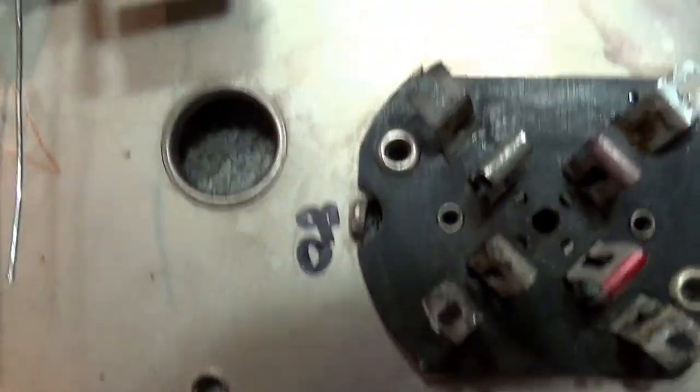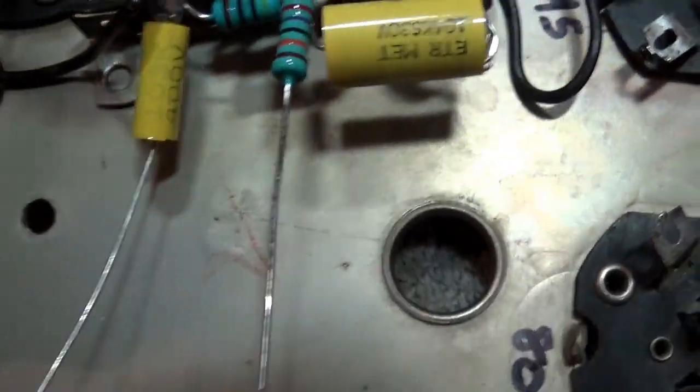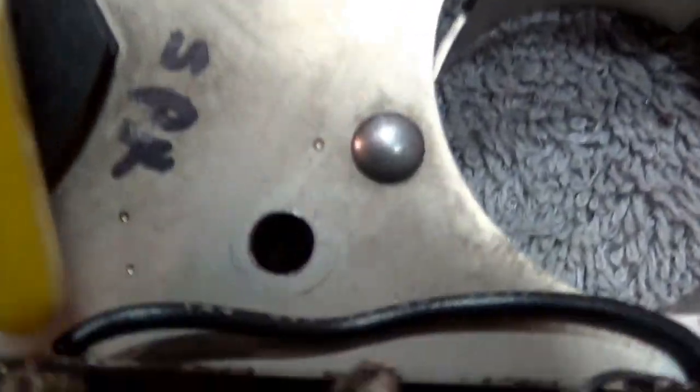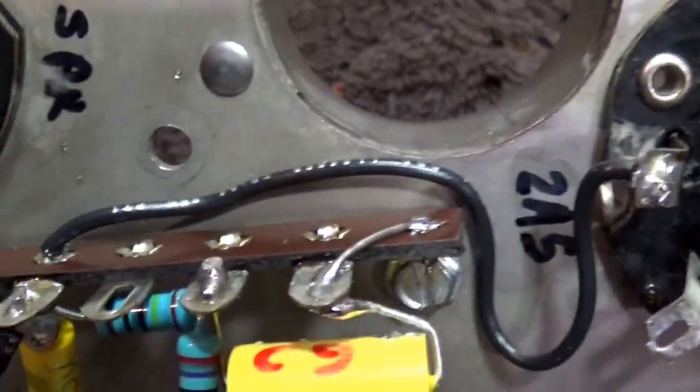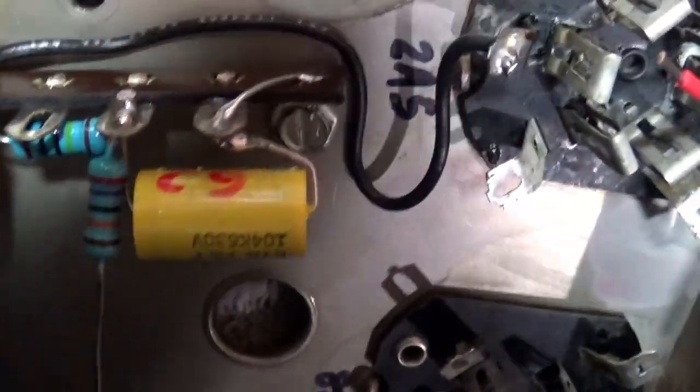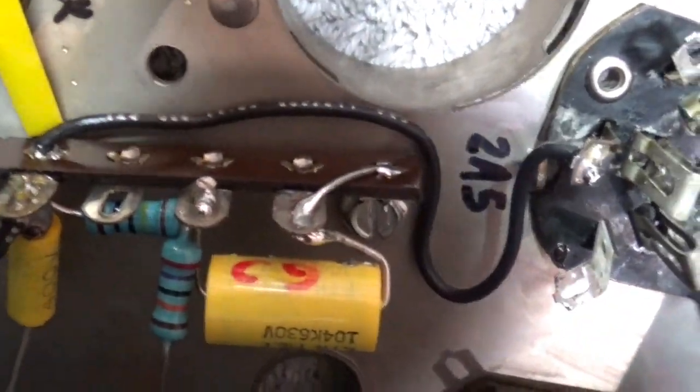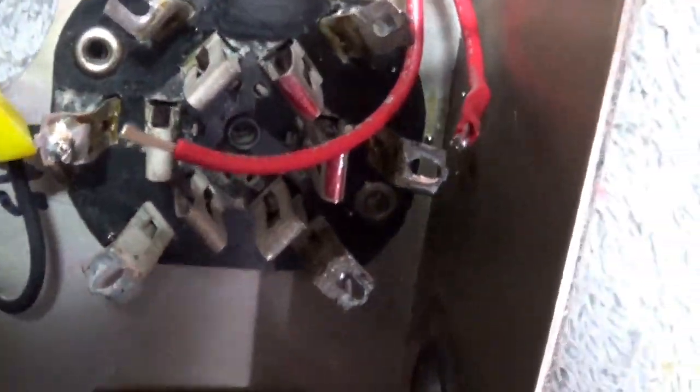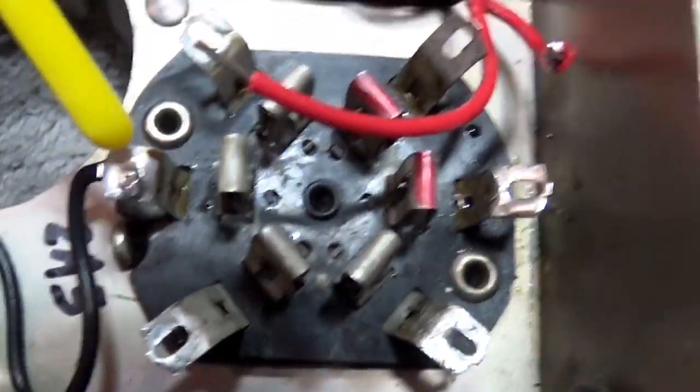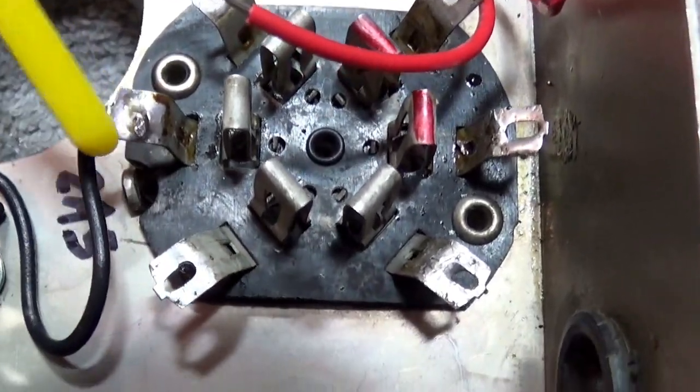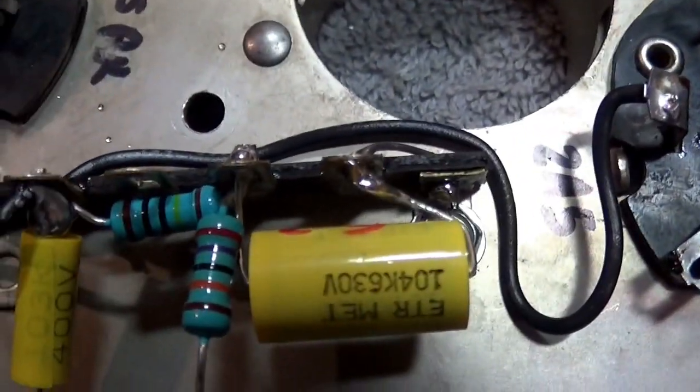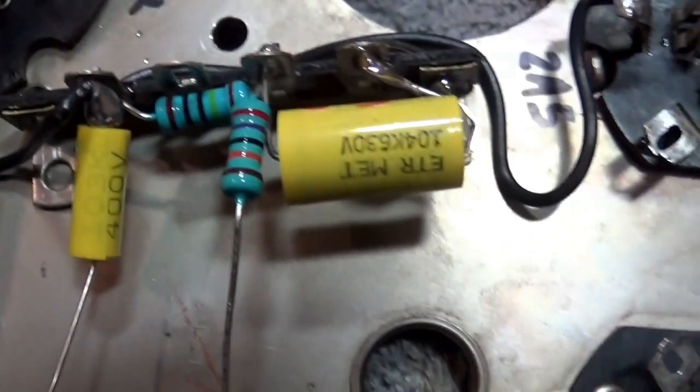So what I did here, because I used the terminal strip, is I used the bottom part of the terminal strip, which is right down here, and you'll see, let's see if I can point it out for you, you'll see right here, that's the bottom part of the terminal strip, and I have a wire that's run all the way over here to the grid on the 2A5 tube. You following me? I essentially have that entire part connected.